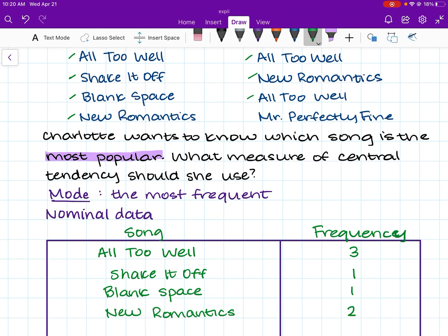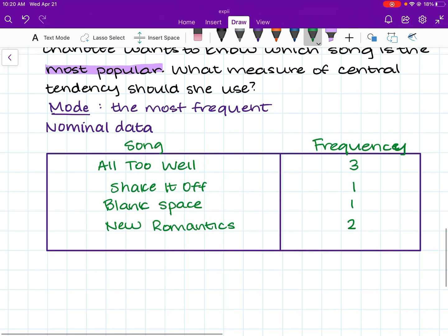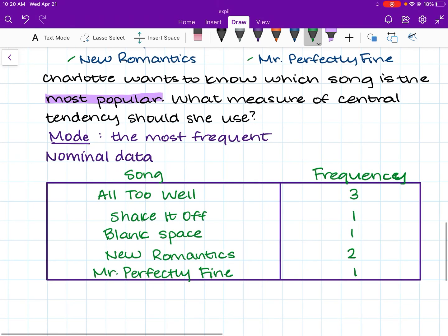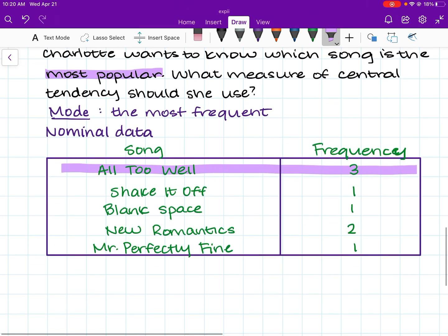And the last song here is Mr. Perfectly Fine. And so we'll add that at the bottom. Mr. Perfectly Fine. And that only shows up once. So because we're looking for the mode, we know we are looking for the data point that is the most frequent. And so we're looking for the song that has the highest frequency. And we can see that that is All Too Well. All Too Well has the highest frequency at three. So Charlotte can say that All Too Well is the most popular song.